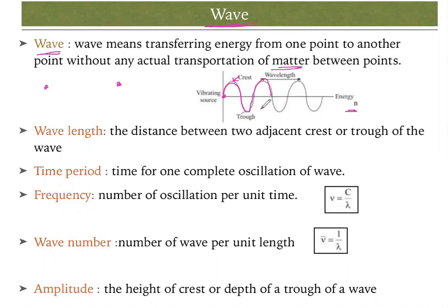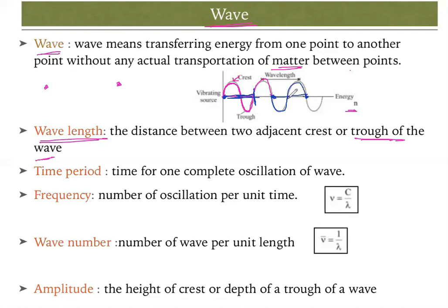Now, what are the components of a wave? First is the wavelength. The wavelength is the distance between two adjacent crests or troughs of the wave. From point A to point B — that distance is one wavelength. You can consider one trough and one crest together. The wavelength is represented by the symbol lambda (λ).